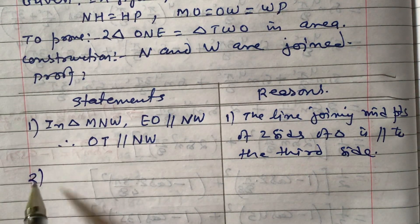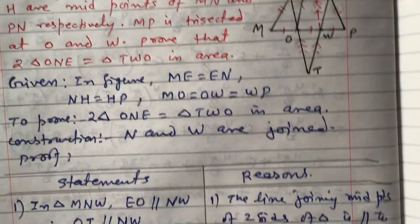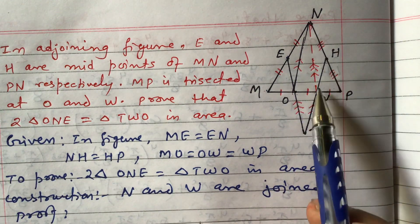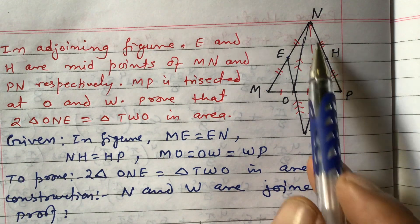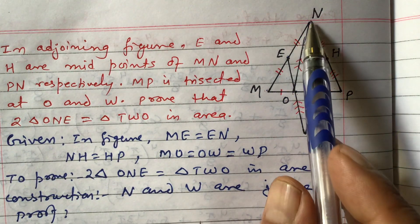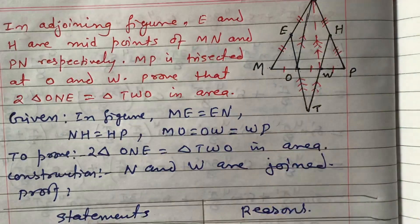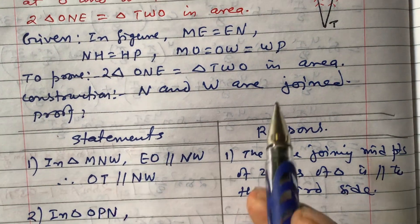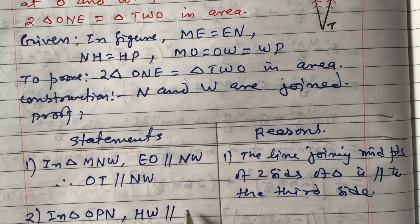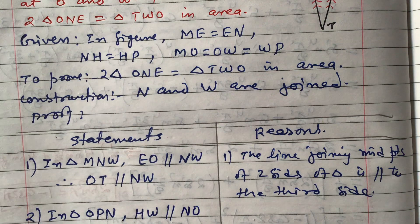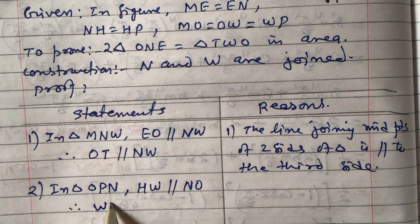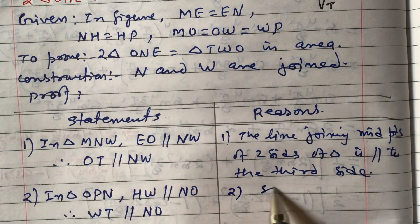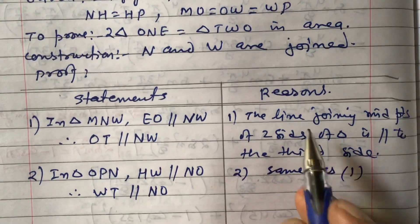Statement 2: In triangle OPN, H and W are midpoints of two sides. Therefore, by the same midpoint theorem, HW is parallel to NO. Consequently, WT is also parallel to NO. Reason: same as Statement 1.